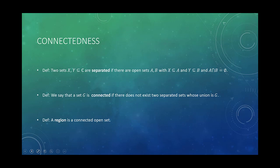The next idea is connectedness, which is also intuitive. I like to think of a connected set as one where all the points are somehow connected without any gaps. To make that precise: given two sets X and Y, we say they are separated if there exist open sets A and B with X in A and Y in B, and A and B are disjoint.